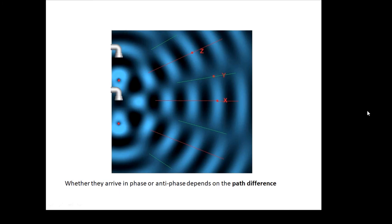At point Z, the waves also arrive in phase, but they haven't traveled the same distance. The difference between the distances — the path difference — equals one wavelength. So one wave may have traveled seven wavelengths and the other eight. For point Y, where we get destructive interference along the green line, the path difference is half a wavelength.